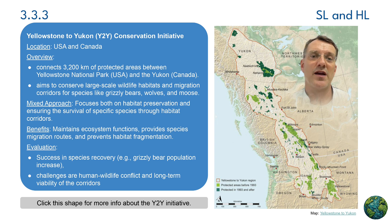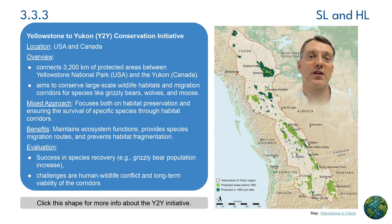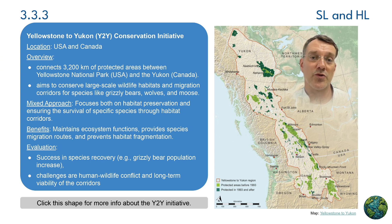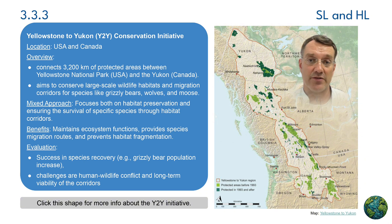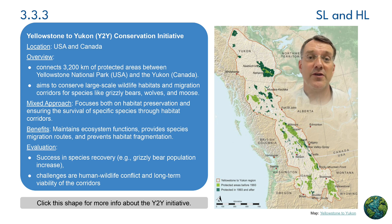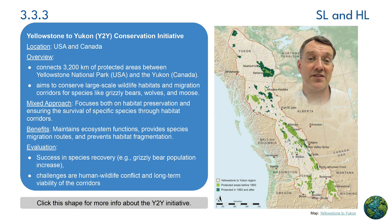The Yellowstone to Yukon Conservation Initiative spans 3,200 kilometers of protected areas between Yellowstone National Park and the Yukon in Canada. It aims to conserve large-scale wildlife habitats and migration corridors for species like grizzly bears, wolves, and moose. Benefits include maintaining ecosystem functions and preventing habitat fragmentation. The initiative has seen success in species recovery such as increasing grizzly bear populations, but faces challenges like human-wildlife conflict and an extensive road network.